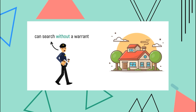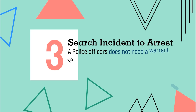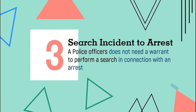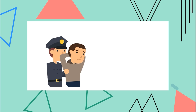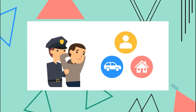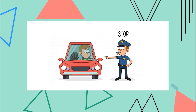Third, search incident to an arrest: a police officer doesn't need a warrant to perform a search in connection with an arrest. For example, if you are arrested for drug possession, the police can search for additional drugs by searching you, your home, or your car, and any evidence found can be used against you in court. Last, the plain view doctrine: police officers can legally search an area if the evidence is clearly visible. For example, if a police officer stops a driver for speeding and sees marijuana in the window, a search can be conducted without a warrant.